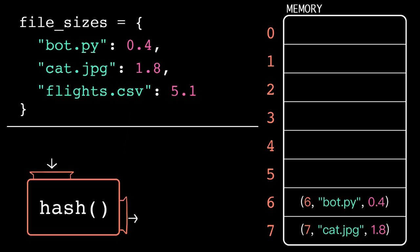This might raise a few questions for you. Like, what if the hash is greater than the number of slots? The computer uses the modulo operator to scale the hash down to the number of slots. The modulo operator takes the remainder of the division. So, if we do 11 modulo 8, we get back 3. So, the flights.csv item goes in the slot at index 3.